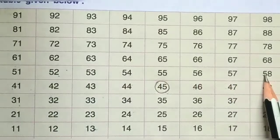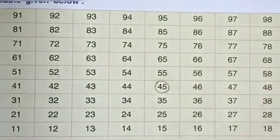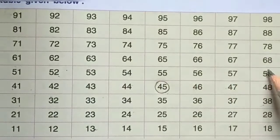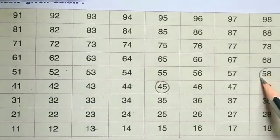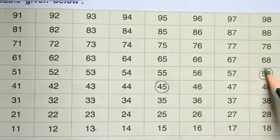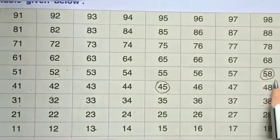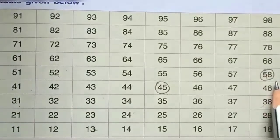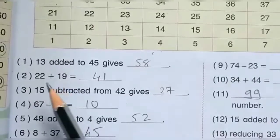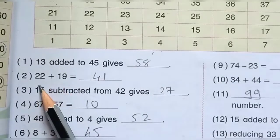Counting 1 through 13 — the 13th count lands on 58. तो 58 circle, answer is 58.